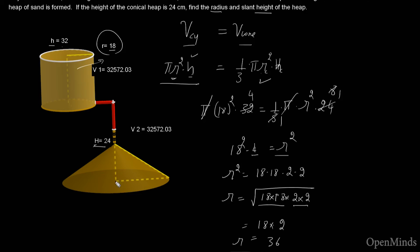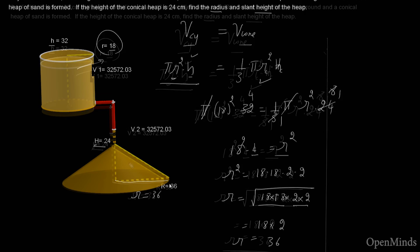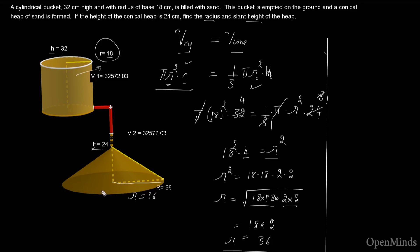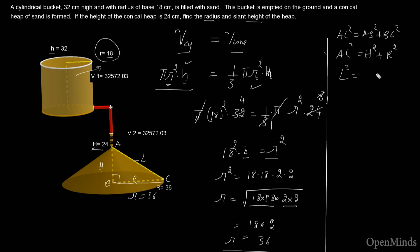So r equals 36. We didn't have to multiply everything out — we could simplify directly. So r = 36 centimeters. Now we still need to find the slant height l. Looking at the cone, we can see a right-angle triangle where the height h, the radius r, and the slant height l form the three sides.